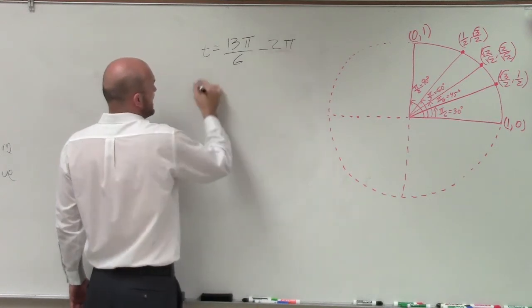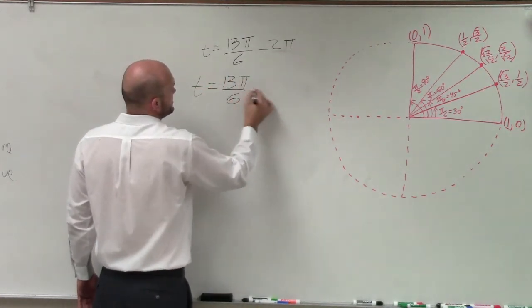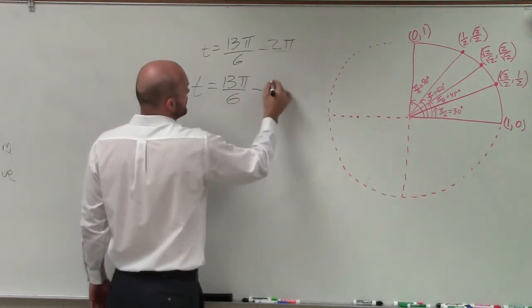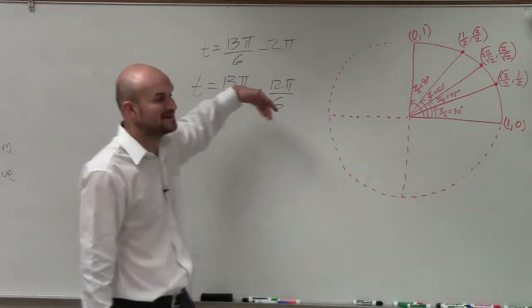I want to make sure it has the same denominator. So really, I'm going to subtract 13 pi over 6 minus, well, 2 pi with a denominator 6 is really the same thing as 12 pi over 6, right? Because 12 divided by 6 is 2.